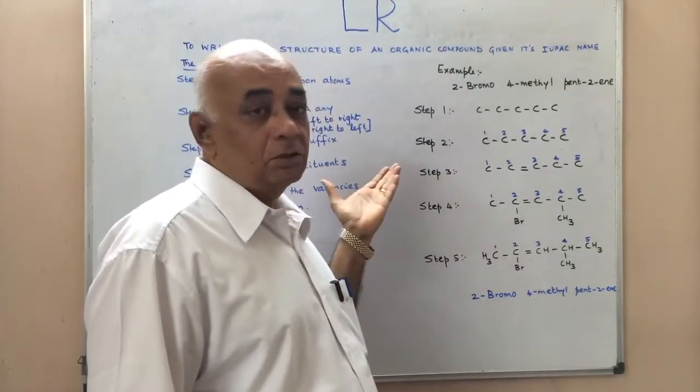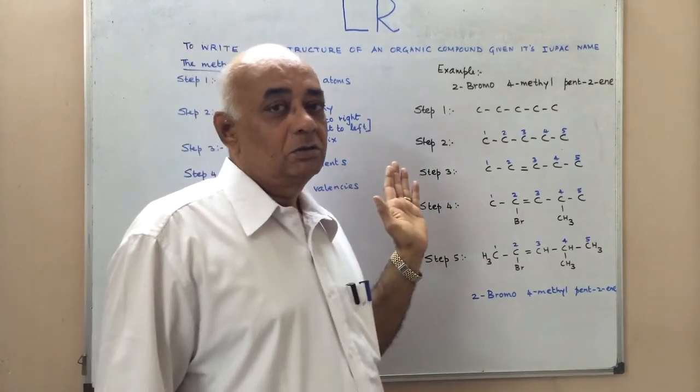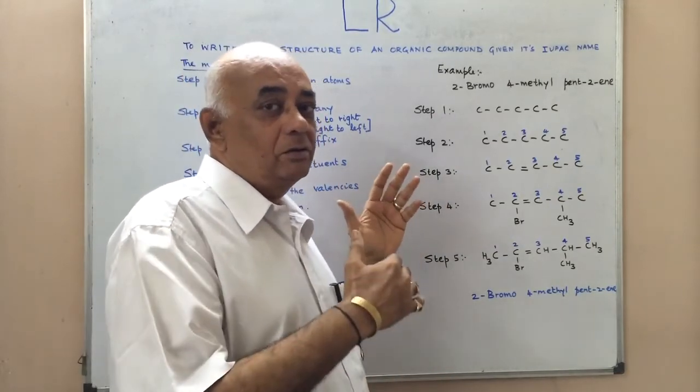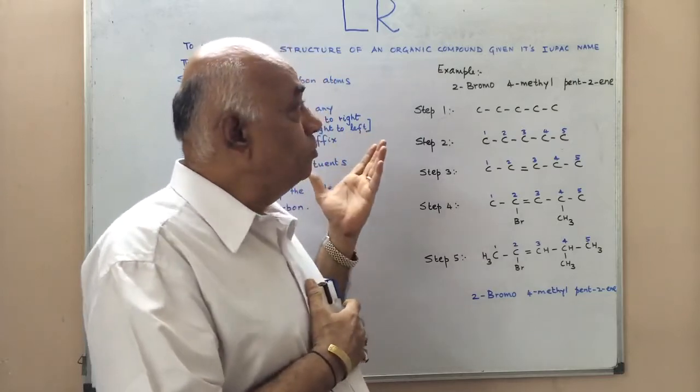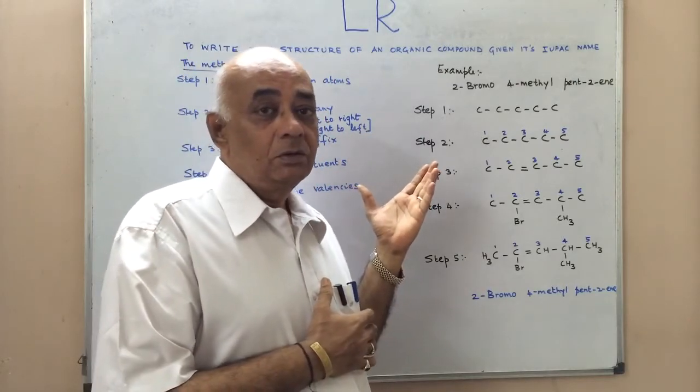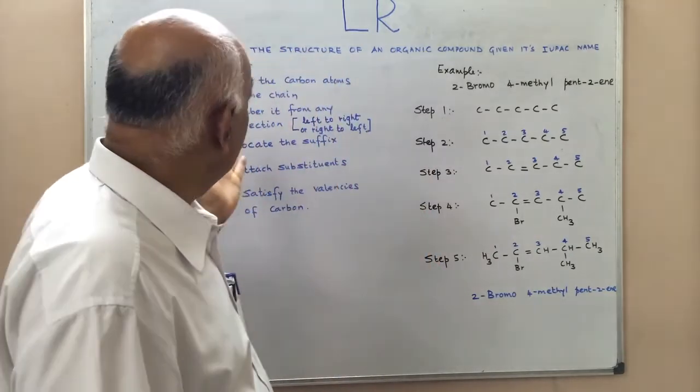We now come to the last part of nomenclature of organic compounds in trying to write the structure of an organic compound given its IUPAC name. We follow our system for that. The system is as follows.